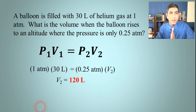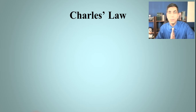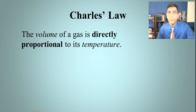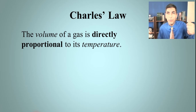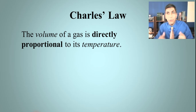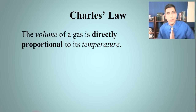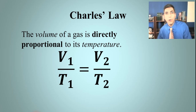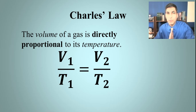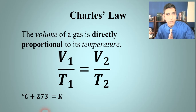The next gas law is Charles' law. Charles' law tells us that the volume of a gas is directly proportional to its temperature — when one goes up, the other goes up; when one goes down, the other goes down too. The equation is v1 over t1 equals v2 over t2, where v is volume and t is temperature. Remember, temperature must be in Kelvin. To convert: Celsius plus 273 gives Kelvin.